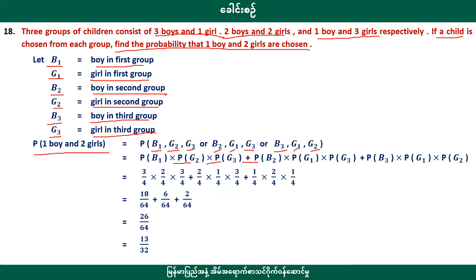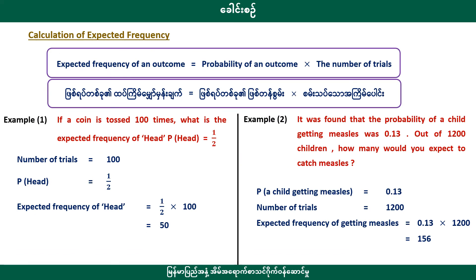To calculate the expected frequency, the formula is: expected frequency equals probability multiplied by the number of trials. The probability is the chance of winning a given trial, and the number of trials is 100.